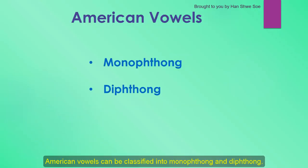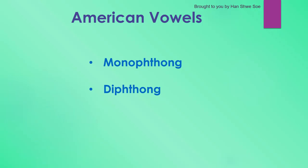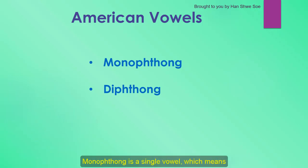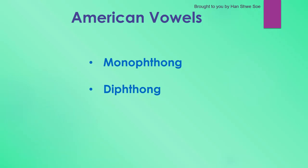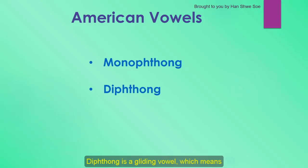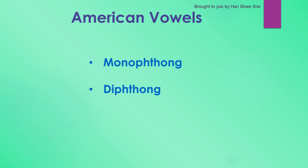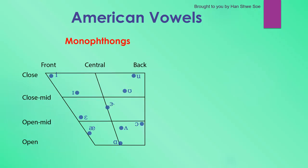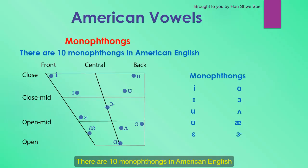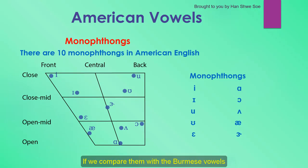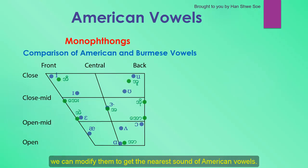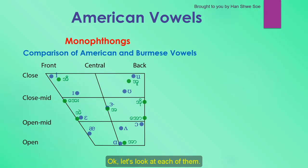American vowels can be classified into monophthong and diphthong. Monophthong is a single vowel, which means the tongue at the beginning and end of the vowel is fixed. Diphthong is a gliding vowel, which means the tongue position changes during the articulation. There are 10 monophthongs in American English and the vowel length is not very different. If we compare them with the Burmese vowels, we can modify them to get the nearest sound of American vowels.